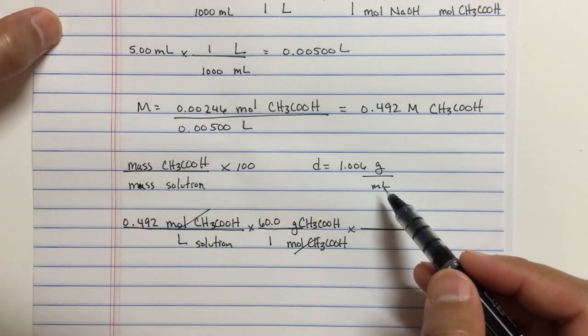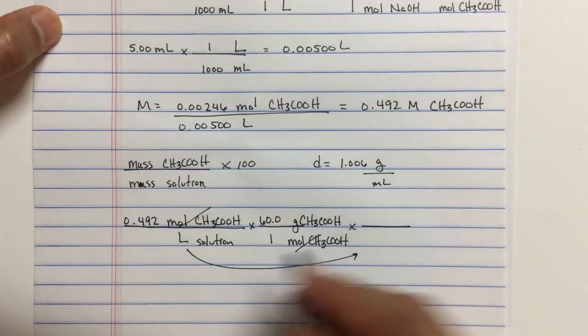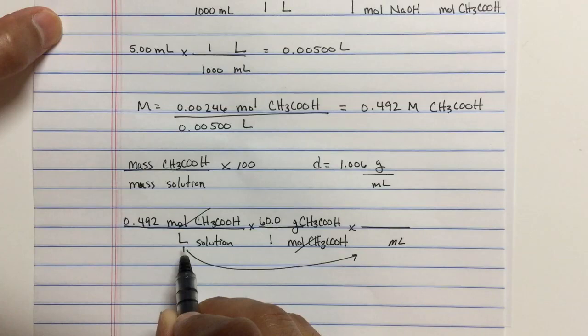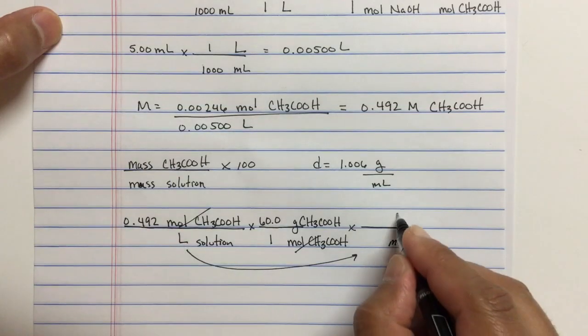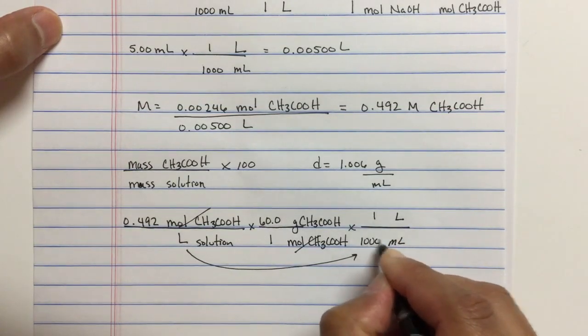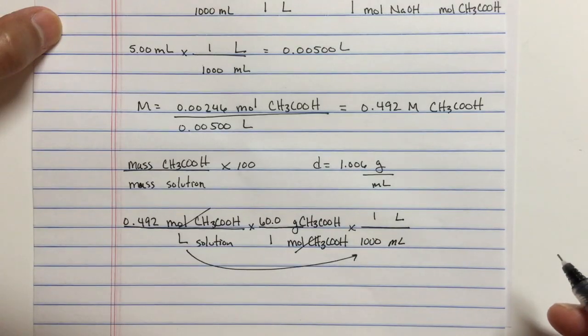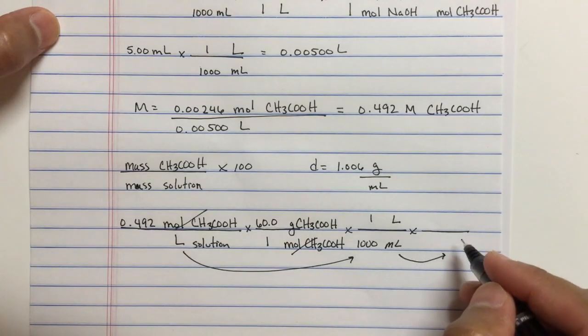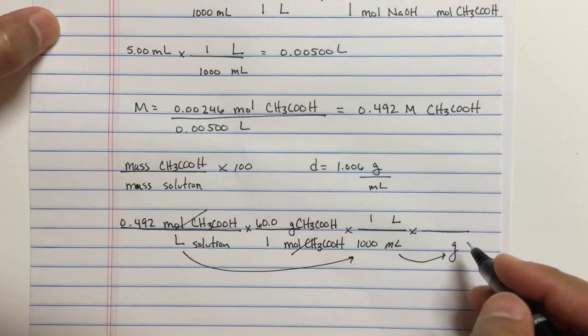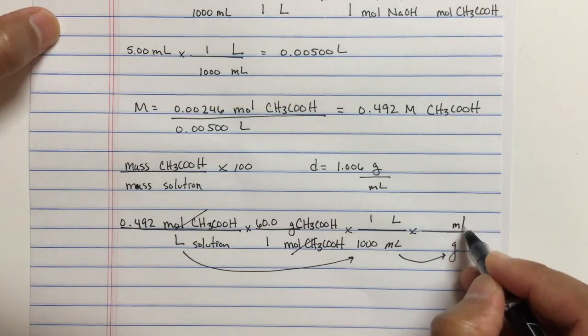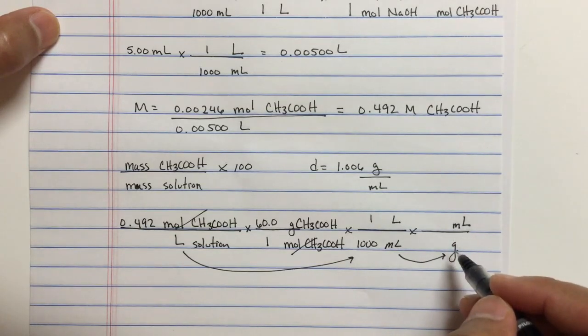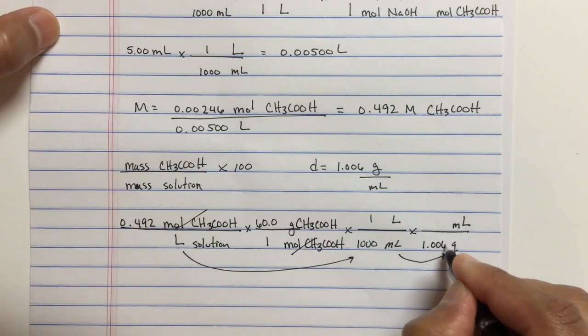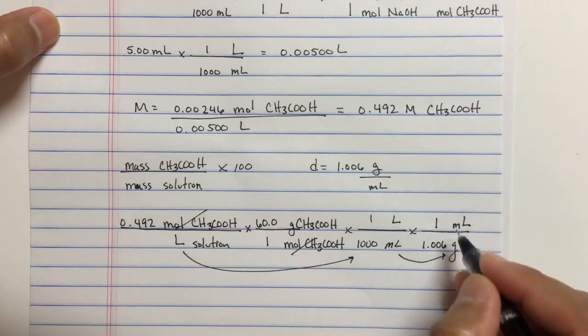Now, our density is in terms of milliliters. So, I'll tell you what we'll do. We'll convert the liters to milliliters first. Cancel liters. So, that's going to go on top. And then, once we do that, then we can convert the milliliters of solution to grams of solution and cancel milliliters up on top. So, the density, of course, is given to us 1.006 grams per milliliter.